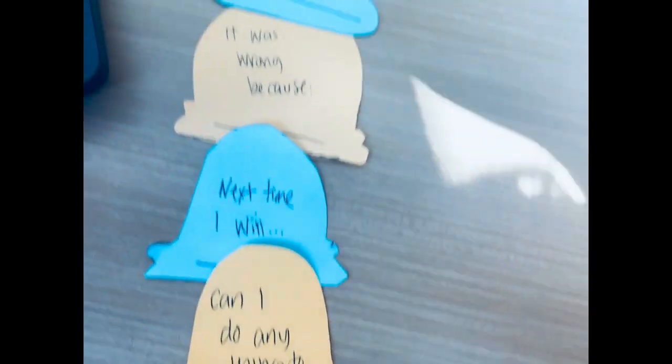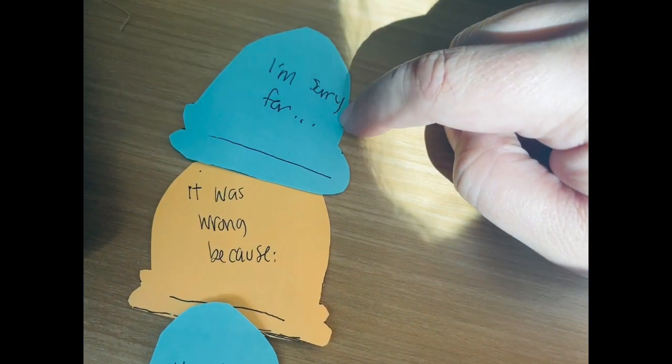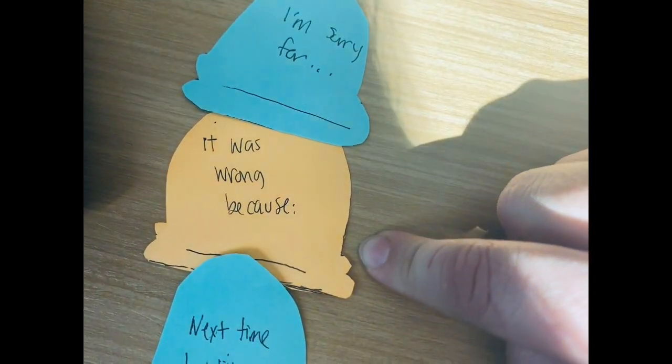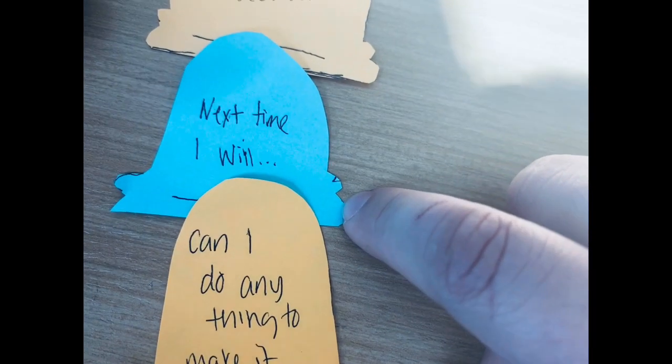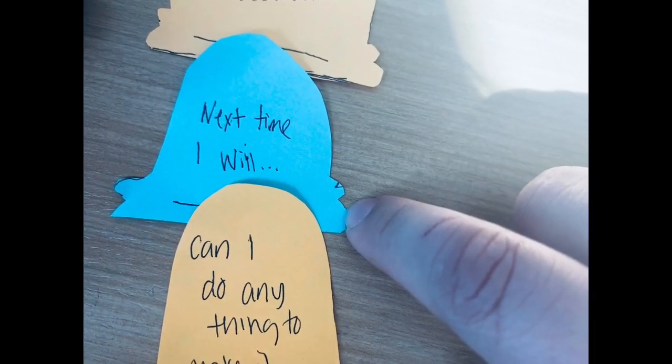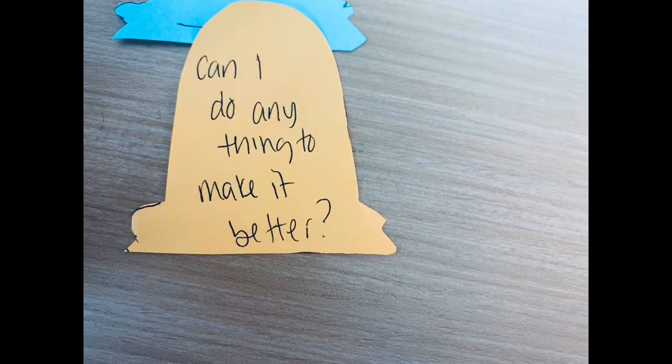So let me give you an example. It's like 'I'm sorry for hitting you. It was wrong because we shouldn't hit people when we're angry. Next time I can tell you why I'm angry and is there anything I can do to make it better.'